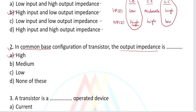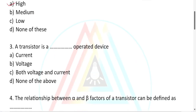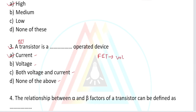Question number three: A transistor is a — current operated device, voltage operated device, both voltage and current, or none of the above? A transistor is a current operated device, also called a current control device. The transistor output depends on the base input current.